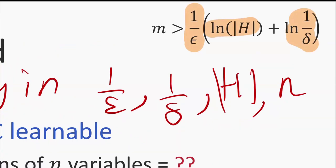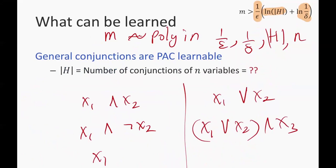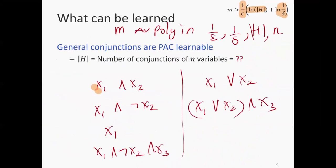So we need to somehow connect this expression to the dimensionality. How many conjunctions exist if you have n features? Because if we can answer that question, we'll connect the size of h and n, and we'll get an expression in terms of n.